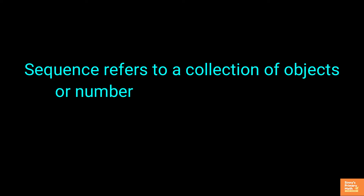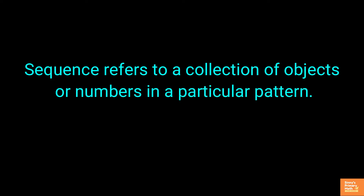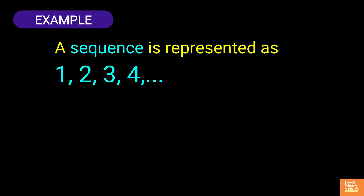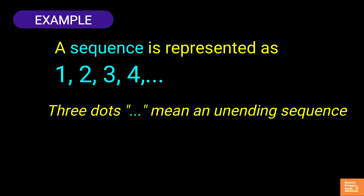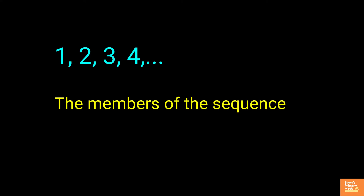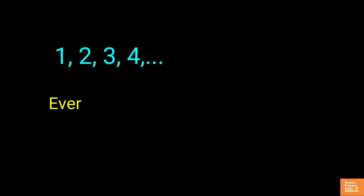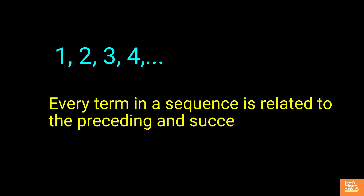Sequence refers to a collection of objects or numbers in a particular pattern. For example, a sequence is represented as 1, 2, 3, 4, and so on. Three dots mean an unending sequence — infinite. The members of the sequence are called terms or elements. Every term in a sequence is related to the preceding and succeeding term.